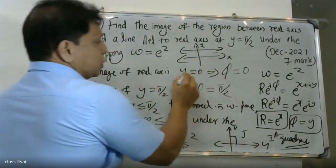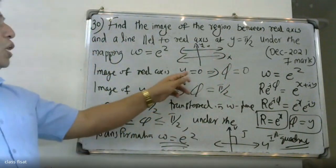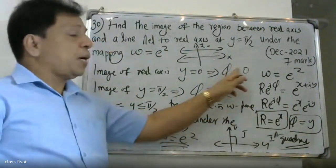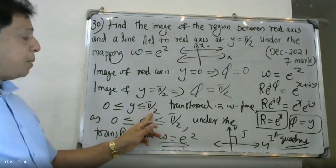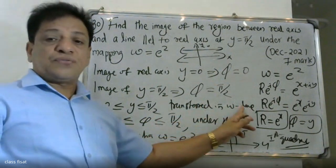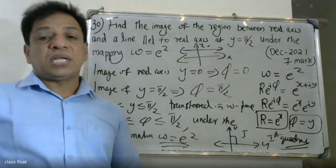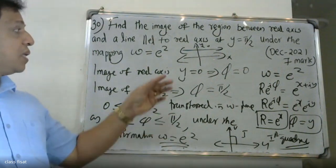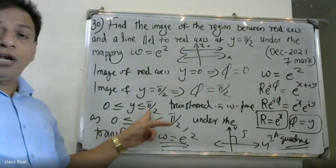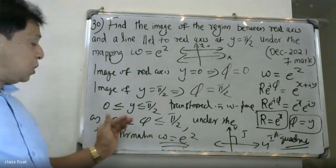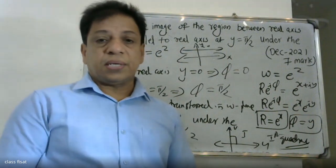So φ = 0 corresponds to y = 0, and φ = π/2 corresponds to y = π/2. Therefore, 0 < φ < π/2 is transferred into the w-plane under the transformation w = e^z. The region 0 ≤ φ ≤ π/2 in the w-plane is the image of the given strip under the transformation w = e^z.